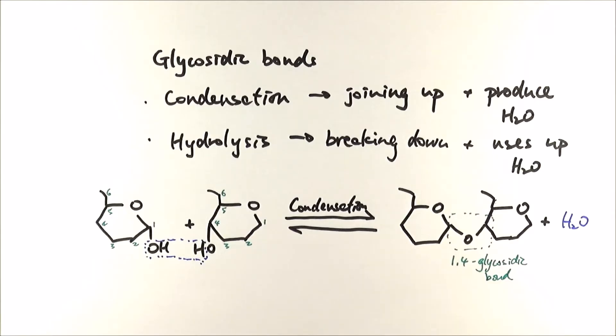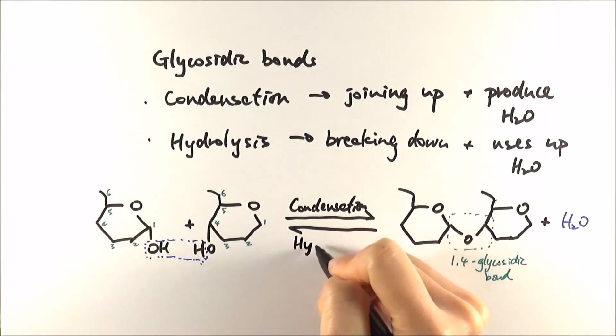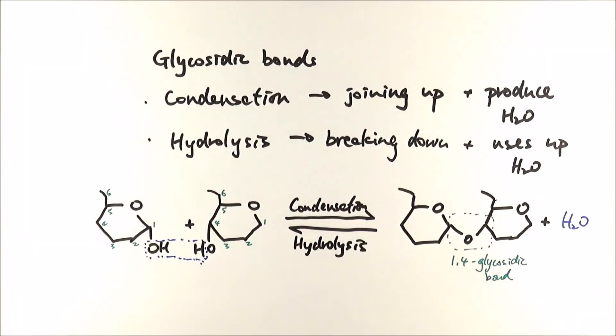Now the reaction can happen in the opposite direction and in this case you use the water molecule to break. So the water comes in and there's obviously electron transfer here, and then they join up with this glycosidic bond splitting them up into two alpha glucose molecules again, and then this reverse reaction is what we call the hydrolysis reaction. And that's it in a simple way, that's how glycosidic bonds are formed and broken down.